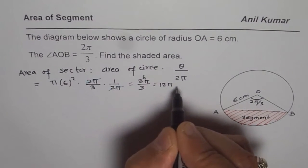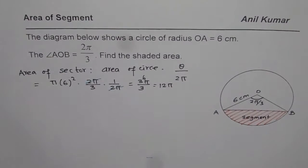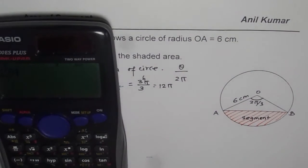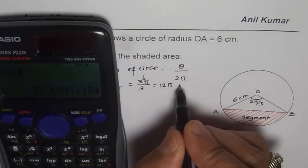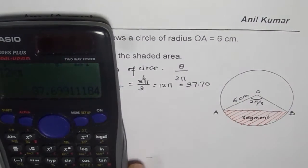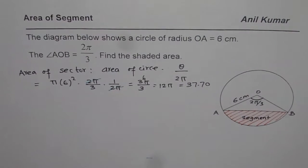So we get 12π as our answer for this particular area of sector. In decimals we could write this as 12 times π which is equal to around 37.70. So that is the answer for area of the sector.